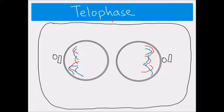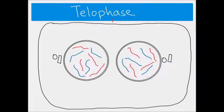Our nuclear membranes, and now of course we've got two of them, they will reappear. Again, the chromosomes are getting less and less condensed. Our nucleoli will reappear. So we've now got a nucleolus in each of our new nuclei.